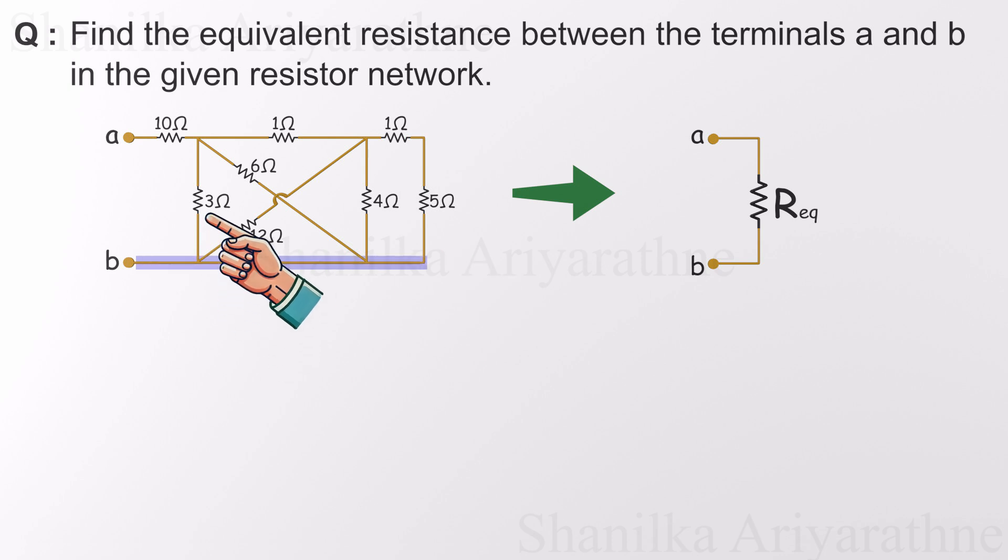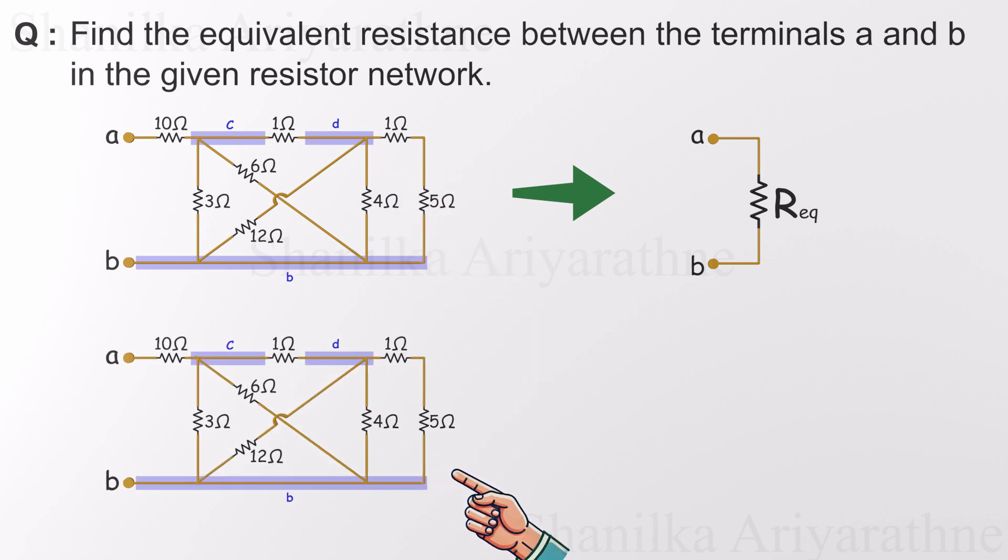You'll notice that the 3 ohms, 6 ohms, 12 ohms, and 4 ohms resistors all connect to the same central node. We'll call that node B. Now let's label the other junctions as C and D to help track connections more clearly. Now I'm going to make a few key changes to help you see what's really going on beneath the surface.